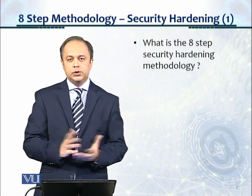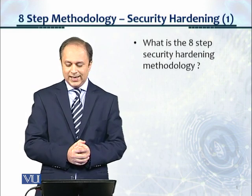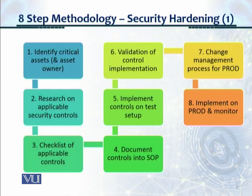The question we will address in this module is: what is the eight-step security hardening methodology? This is a diagram for the methodology — let's walk through each of the eight steps. Step one: identify critical assets and the asset owner. Step two: research on the applicable security controls. Step three: a checklist of the applicable controls is developed. Step four: document the controls into a standard operating procedure, or SOP.